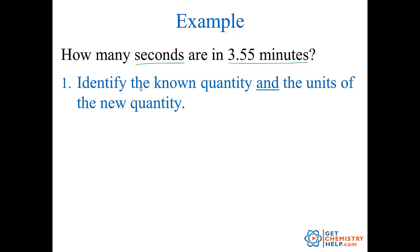Step one says: identify the known quantity and identify the units of the new quantity. So what's the known quantity? Well, the one I know is 3.55 minutes. So I'm going to write down what I know: 3.55 minutes. And what do I want to know? I'm trying to find seconds. So I'm going to put seconds over here. So I'm trying to get from minutes into seconds.